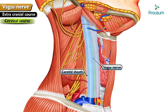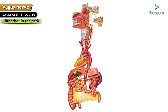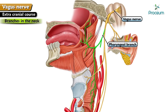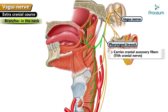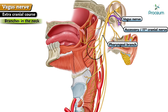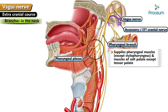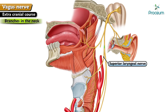The pharyngeal branch carries cranial accessory fibers — the 11th cranial nerve — which take part in the pharyngeal plexus, supplying the pharyngeal muscles except stylopharyngeus, and also the muscles of the soft palate except the tensor palate. The superior laryngeal nerves arise just below the pharyngeal branch and immediately divide into internal and external laryngeal nerves.